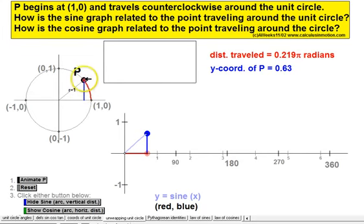Notice that the y-value continues to increase and the corresponding point on the sine graph continues to increase all the way up to 90, where we have a y-value of 1. So at 90 degrees or π/2...